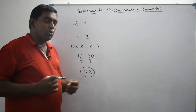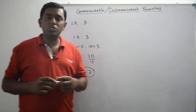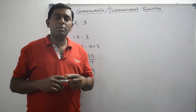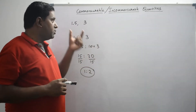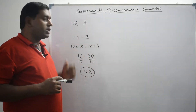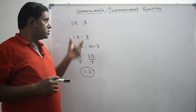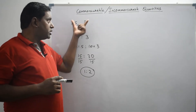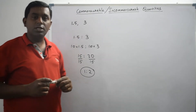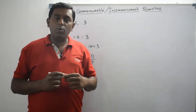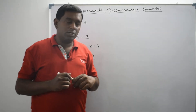So 1 is to 2 is the ratio between the two quantities 1.5 and 3. In this ratio, both the first and second terms are integers. I am able to express the given two quantities as a ratio of integers, so these two quantities are said to be commensurable.